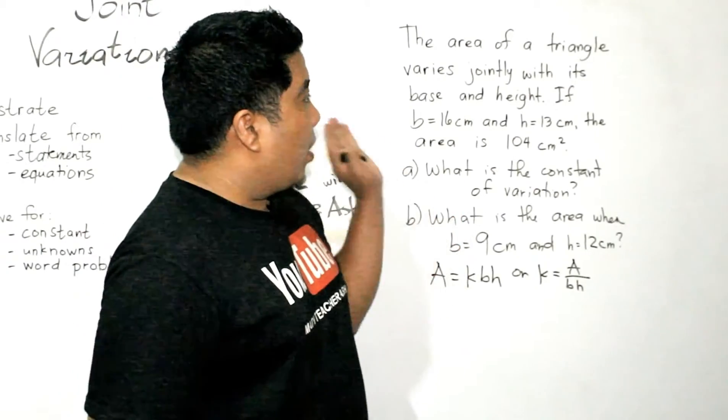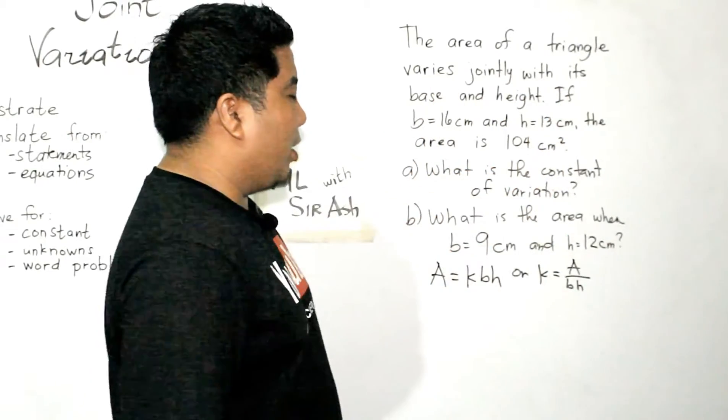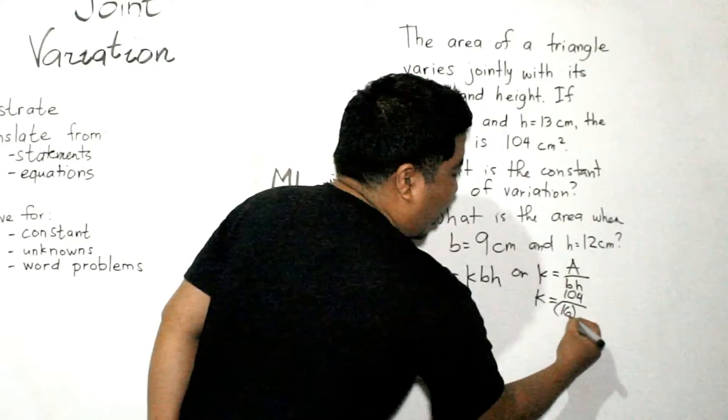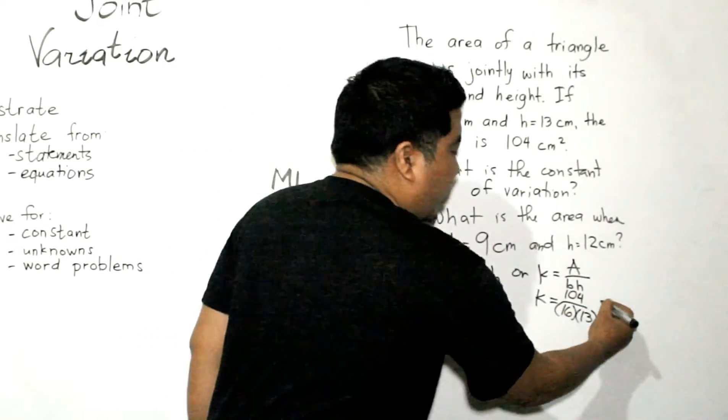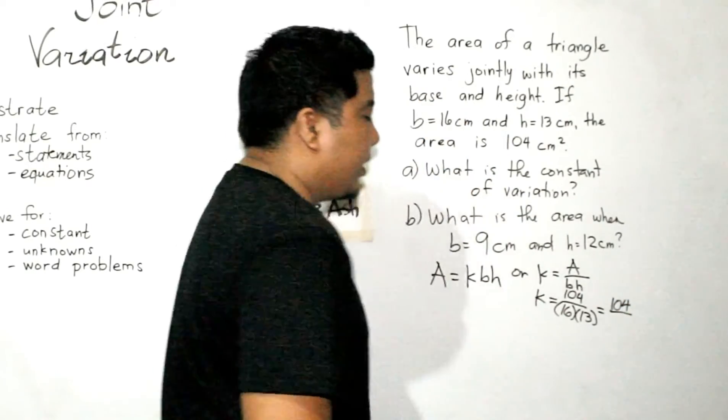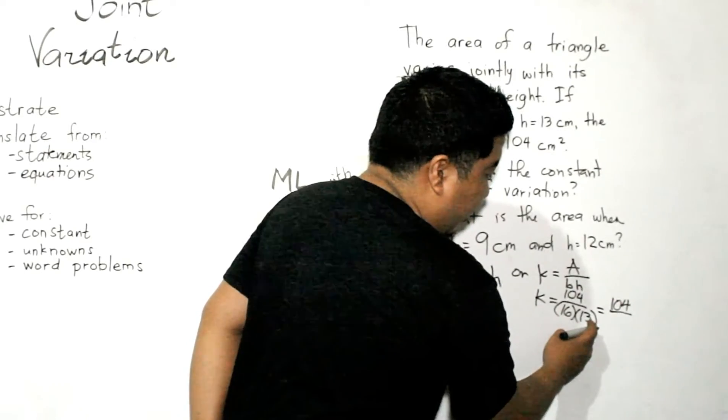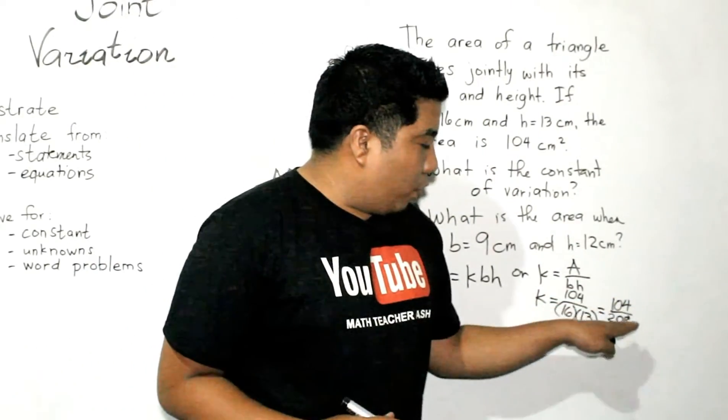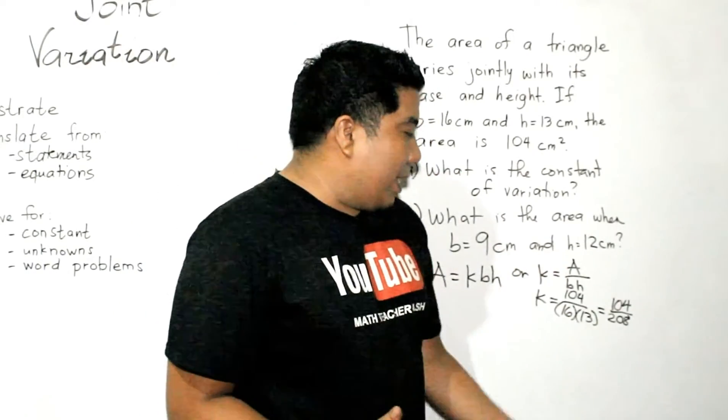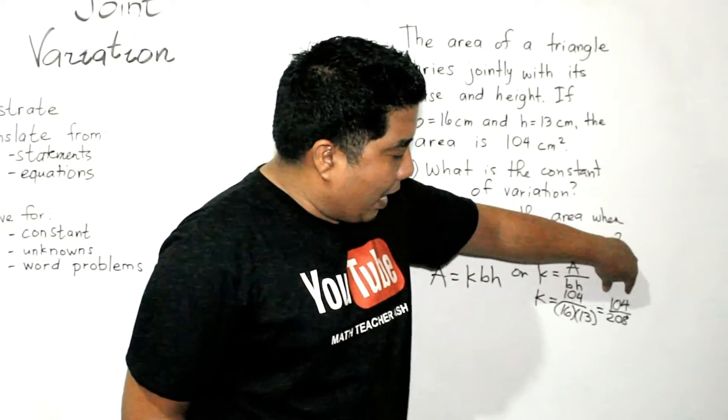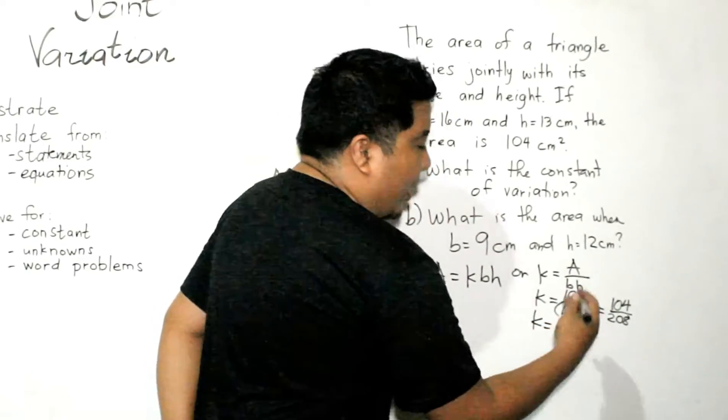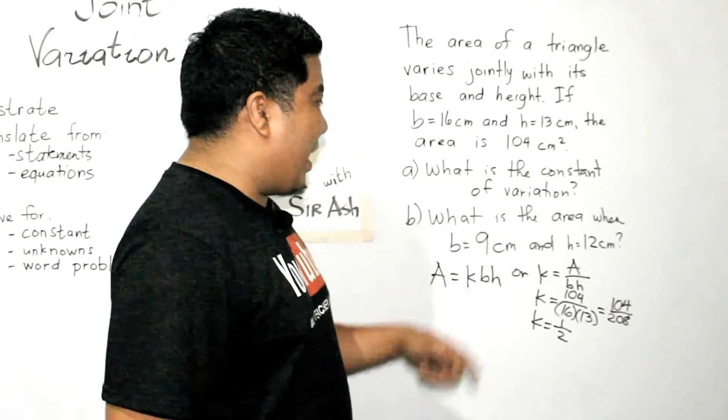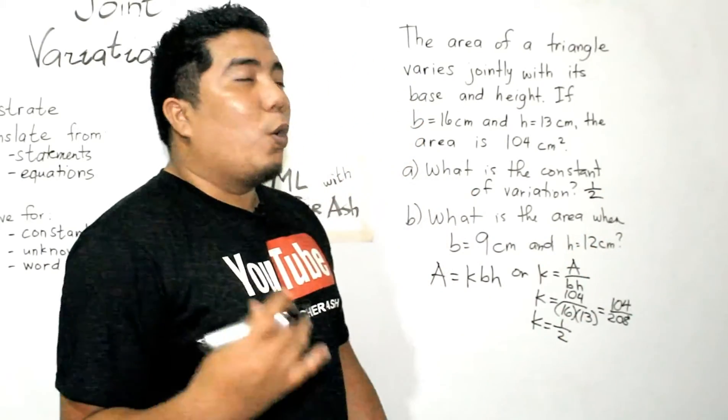So, now, the question is, what is the constant of variation if you have this given? Okay, so, we have 104 as our A. That is 104. Then, our base is 16 and our height is 13. Okay, so, we just need to simplify this one. That is 104 over 16 times 13. That would give us 208. Now, 104 over 208. Can we simplify this? Can they divide with each other? We can, but we can simplify it because 104 is half of 208. Therefore, we can simplify 104 over 208 as one half. So, we have our constant that is one half. So, for letter A, we already have the answer, one half is the constant.